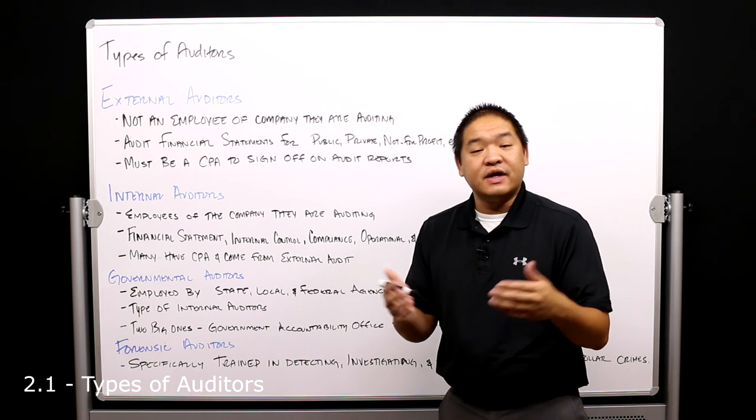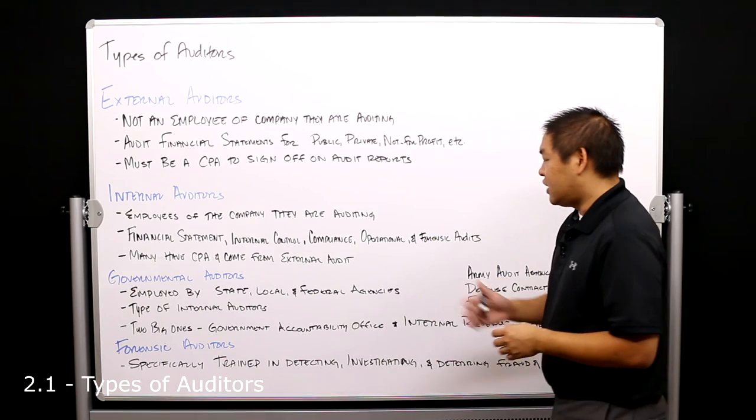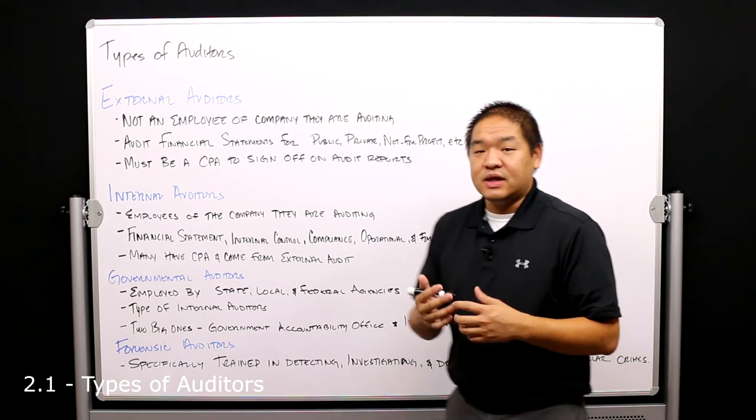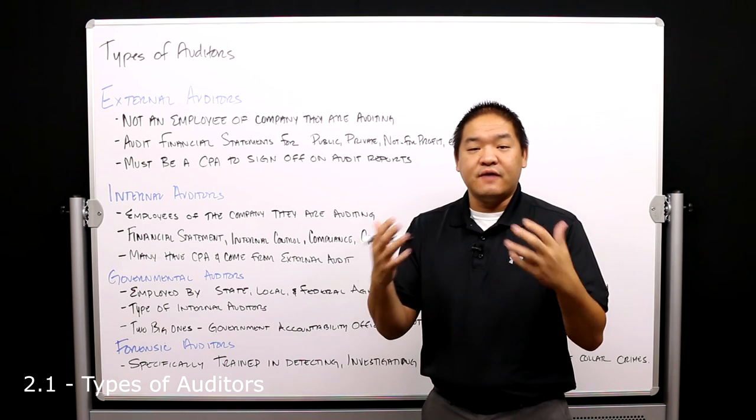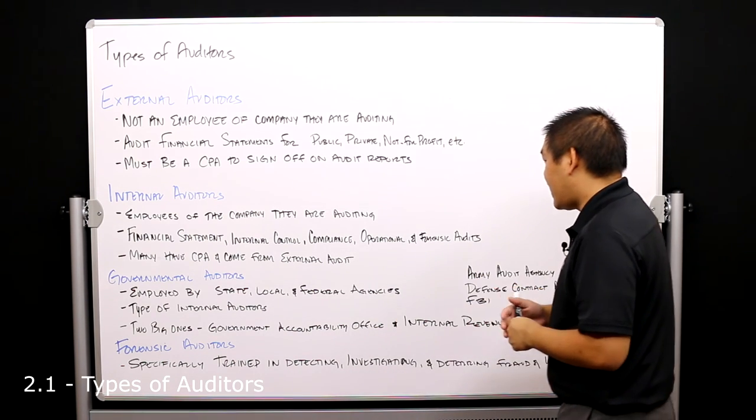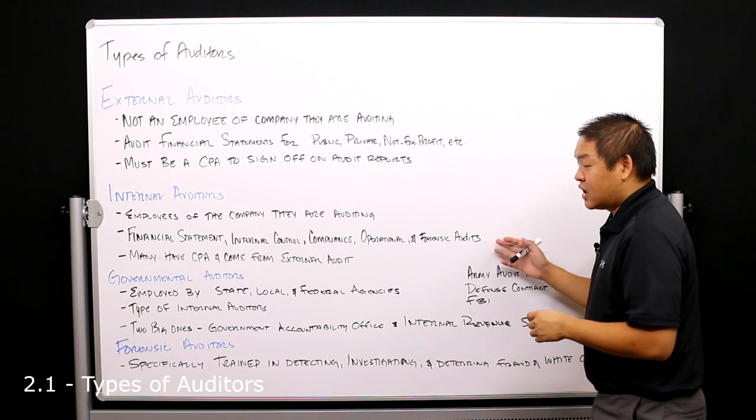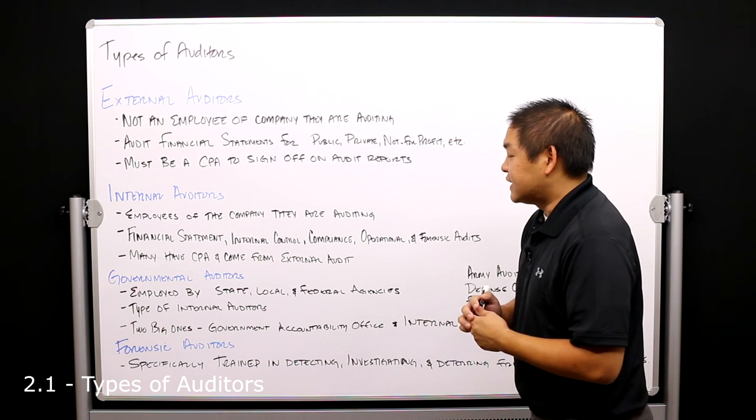And then operational audits—operational meaning that the things that the company is doing is operationally effective—and then forensic audits, which we'll talk more at the very end of this lesson.